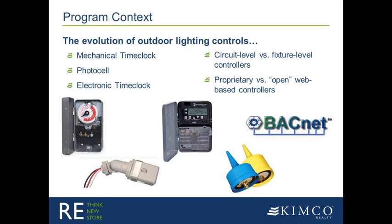You'll see the three components on the bottom left: the mechanical time clock, below that the photo cell, and above that an electronic time clock. These are probably your most common components used for outdoor lighting control. They're all very low cost and easy to install. The cons would be that they're all prone to user errors, both in terms of initial setup and ongoing operation. They're all prone to getting out of calibration over time, and none of them offer a remote connection for real-time monitoring or control of the lighting system.